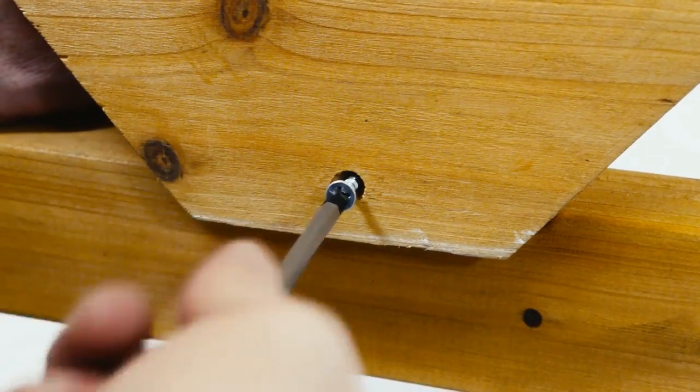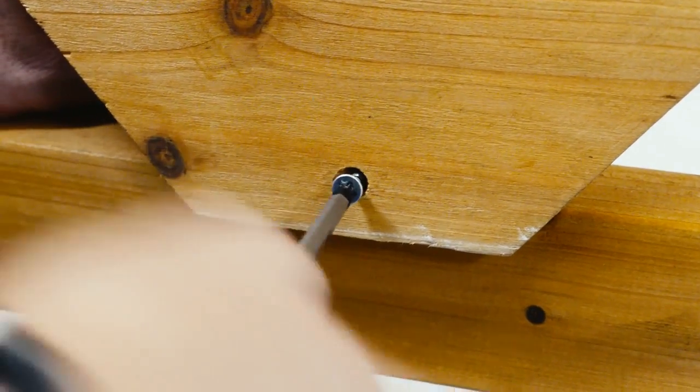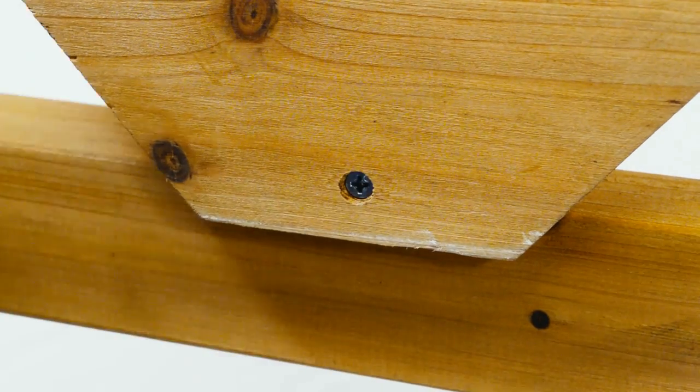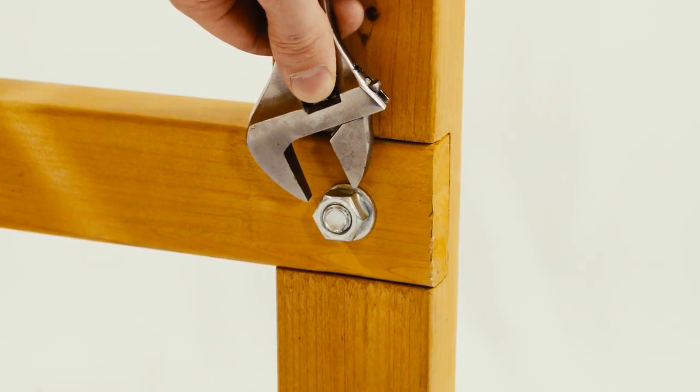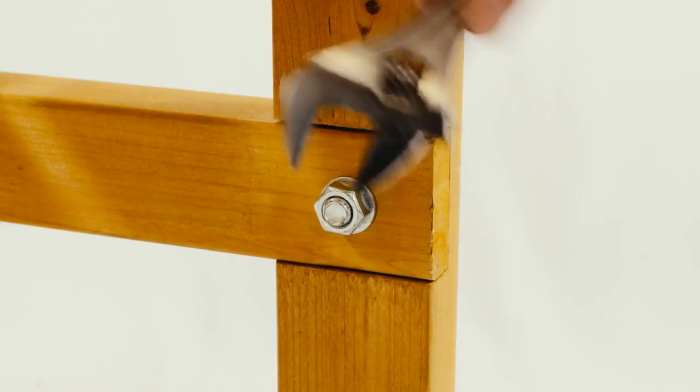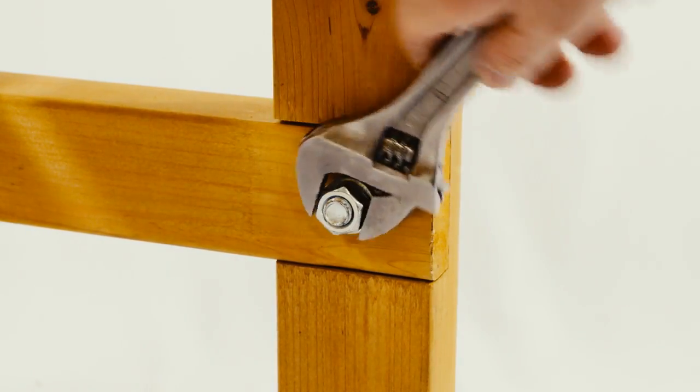Afterwards, screw in the longer screw into the pre-drilled hole at the base of the V-shaped end board. The last construction step after this is to tighten the leg bolts with a wrench. Please ensure that you do not over-tighten the leg bolts. It's not necessary.